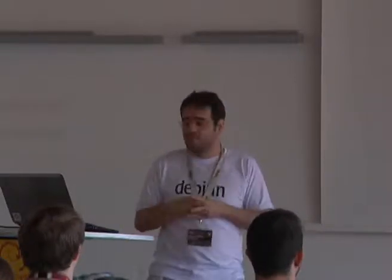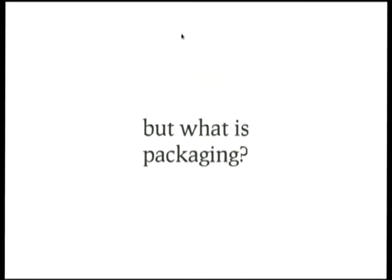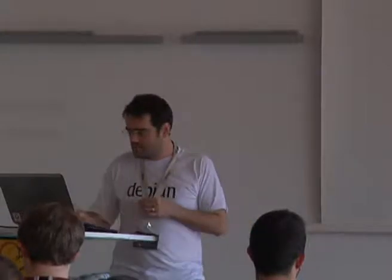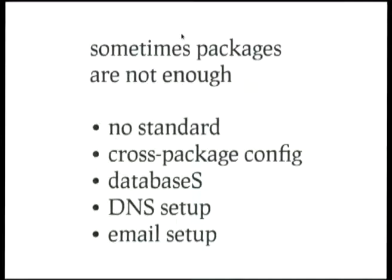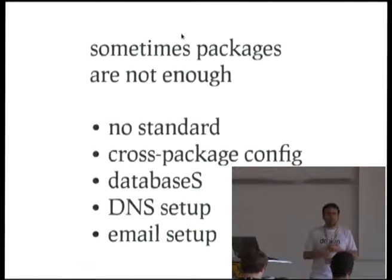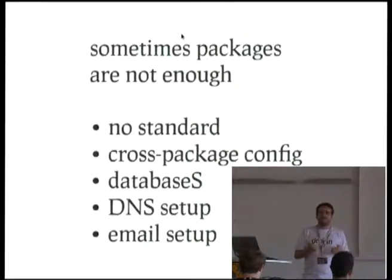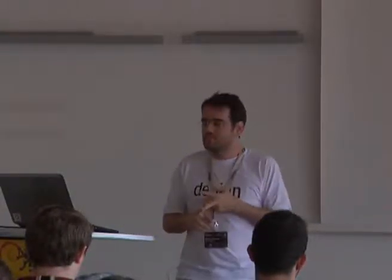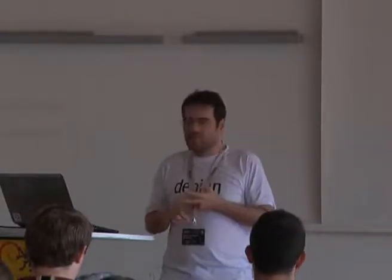We actually have quite a bit of the free software web in Debian already. When I searched a few months ago, we have more than 3,500 packages with 'web' somewhere in the fields, and we have 92 packages that ship files under the Apache configuration directory — excluding Apache itself and Apache modules. I know of several web applications that don't do it at all, like Redmine, which I maintain. So we're quite good at packaging, but that brings the question of what packaging actually means. We have no standard for how a web application should be packaged, and there are complicated cross-package configuration problems involving databases, DNS, email, and SSL.